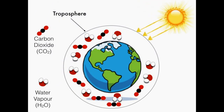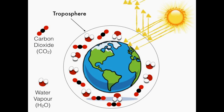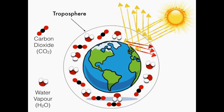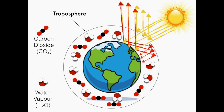The yellow arrows indicate solar energy produced by the sun. This energy may not penetrate the troposphere and therefore reflects back to space. Solar energy can, however, penetrate the troposphere and re-radiate as thermal radiation, indicated by the red arrows.